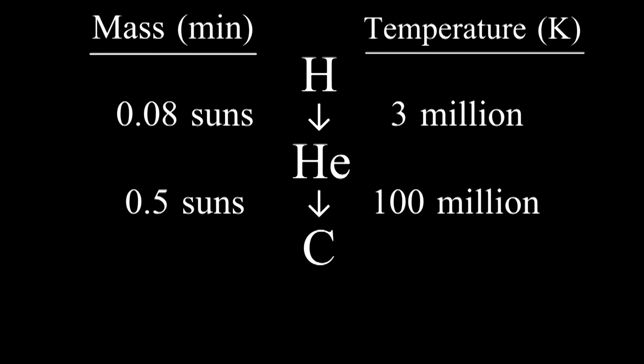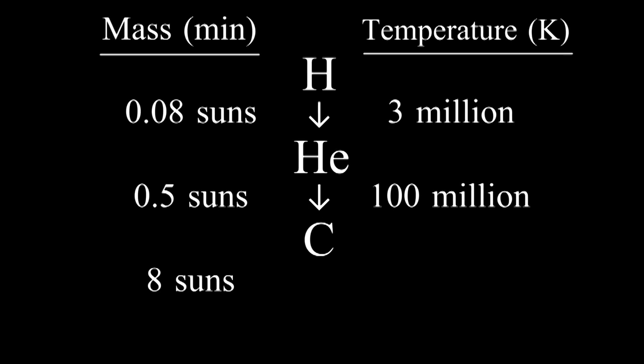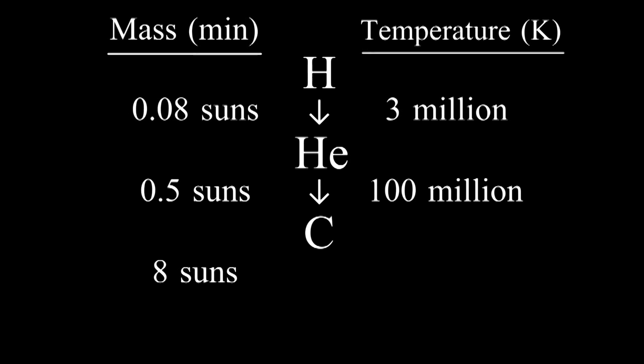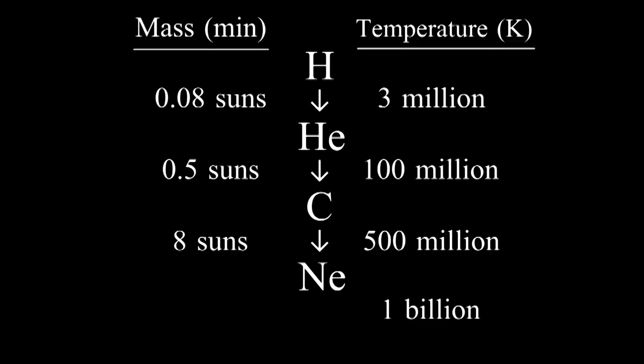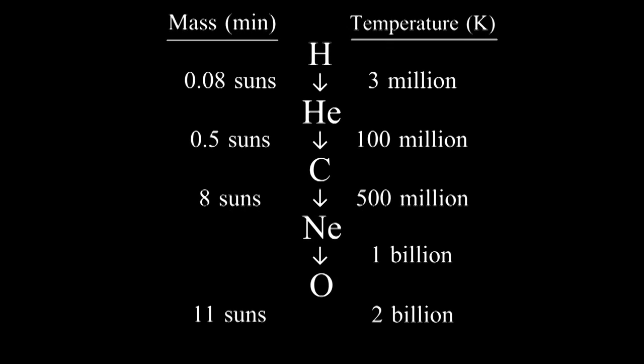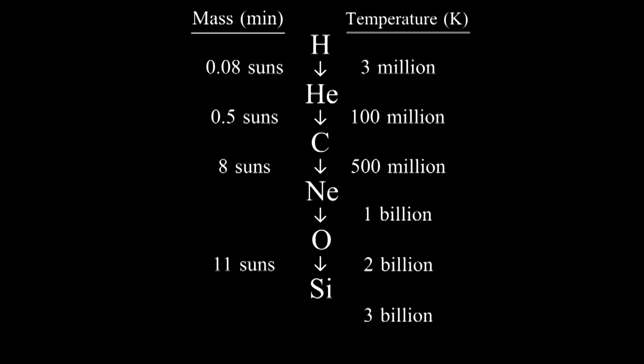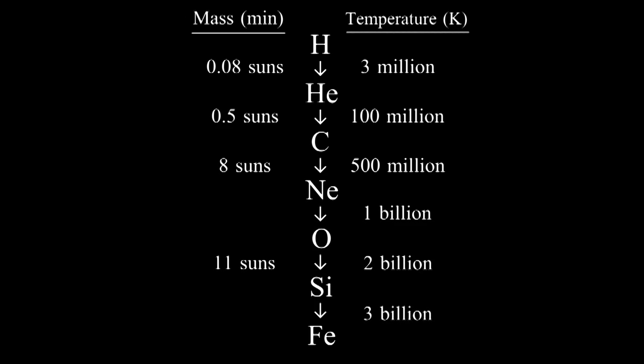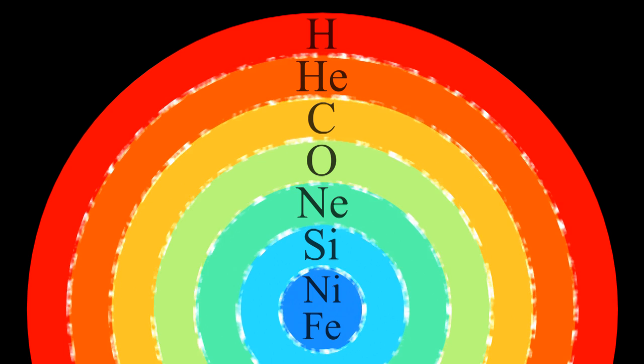Stars like the sun will stop here. They can't burn anything past helium. But stars above eight solar masses are so hot that they can burn heavier elements. At half a billion degrees, carbon fuses into neon. At a billion degrees, neon fuses into oxygen. At two billion degrees, oxygen fuses into silicon. Finally, at three billion degrees, silicon fuses into nickel and iron. Massive stars look like an onion with many layers, hydrogen on top, then helium, carbon, oxygen, neon, silicon, nickel, and iron.